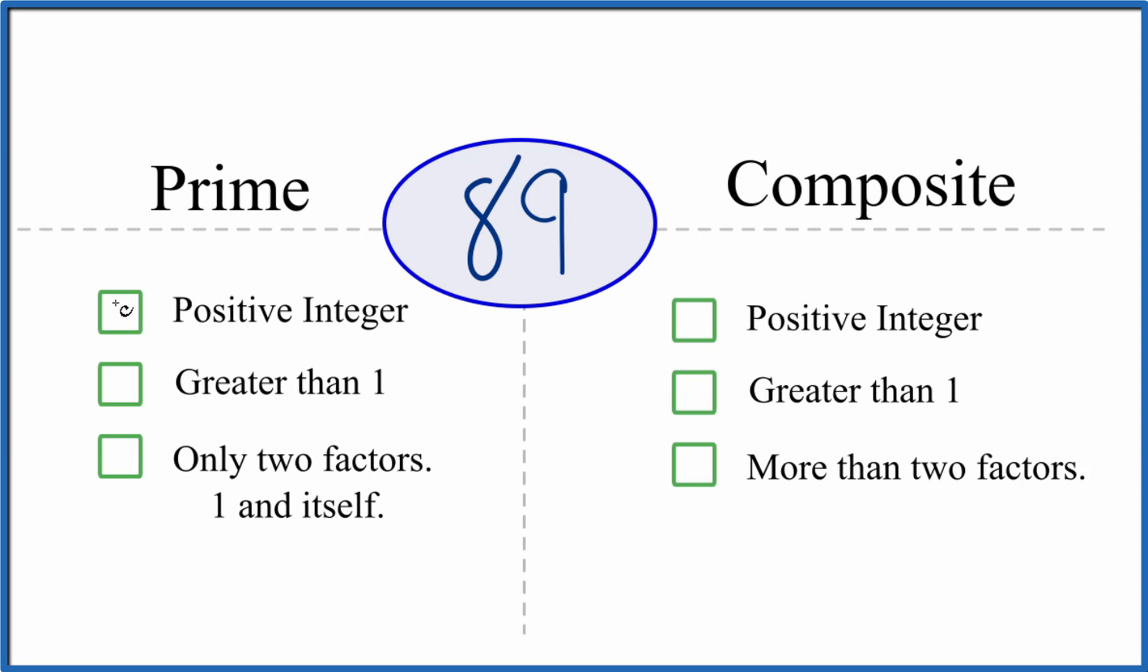Is it a positive integer? It's a positive whole number, greater than 1. Are there only two factors, 1 and itself? So 1 and 89.